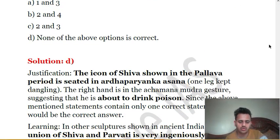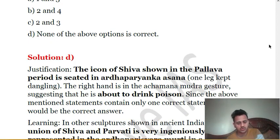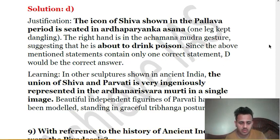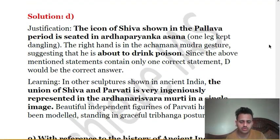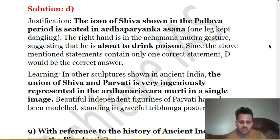This icon of Shiva from the Pallava period is seated in Ardha Priyanka Asana, shown about to drink poison. In other sculptures of ancient India, the union of Shiva and Parvati is very ingeniously represented in the Ardhanarisvara form in a single image.